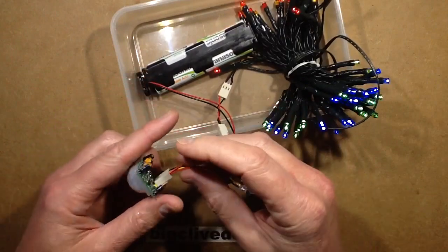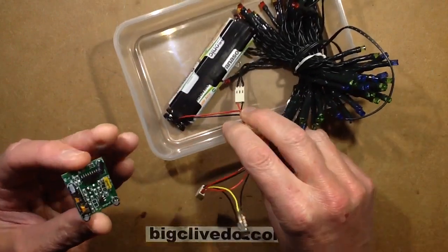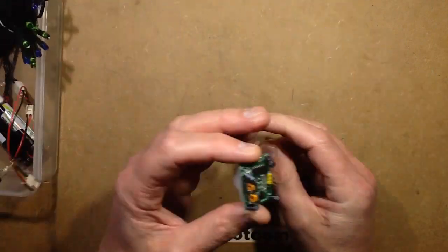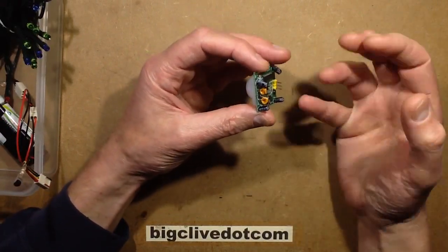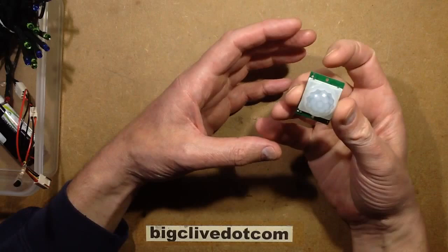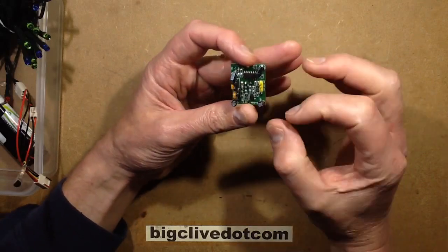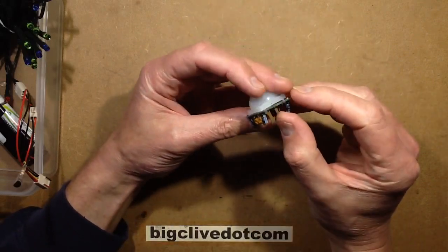However, what I was going to do this time is pull the module off. This is a very standard module. If you do a search on eBay for Arduino PIR, you'll find these modules. They're cheap and readily available. They're just one of the most common PIR modules on eBay.